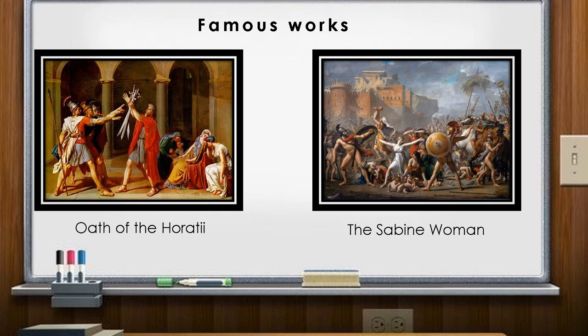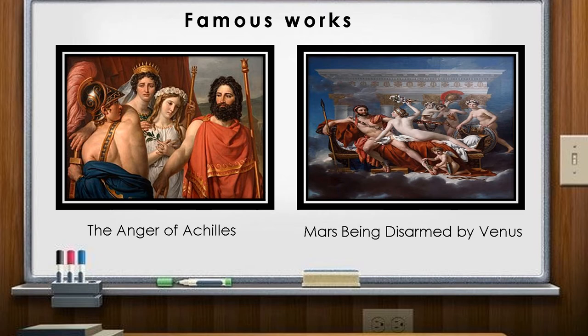These are the famous works of David: the Oath of the Horatii, the Sabine Women, the Anger of Achilles, and Mars Being Disarmed by Venus. If you are familiar with Greek mythology and Roman myths, you can recognize these kinds of paintings from their names.